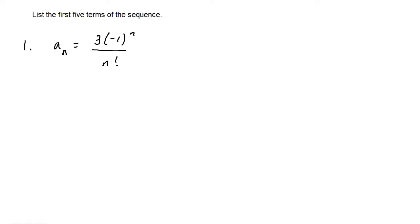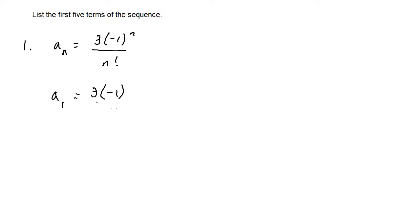For this first set of problems, let's list the first five terms of the sequence. For number one, a_sub_n equals 3 times negative one to the n, over n factorial. Starting with the first term a_sub_1, we plug in 1 for n: 3 times negative one to the first, which is negative one, over 1 factorial, which is 1. So we get negative 3 over 1, which equals negative 3.